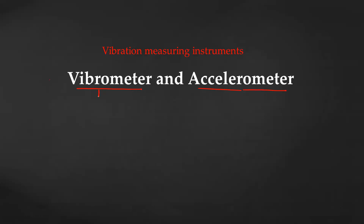The vibrometer is used to measure the displacement. It will measure the displacement of the vibrating body. The second instrument is the accelerometer, which measures the acceleration. This instrument is mounted on the vibrating surface for which you want to measure its displacement or acceleration. Suppose this is the surface of an IC engine or a compressor, vibrating with some amplitude and acceleration. This amplitude and acceleration is recorded by these instruments.